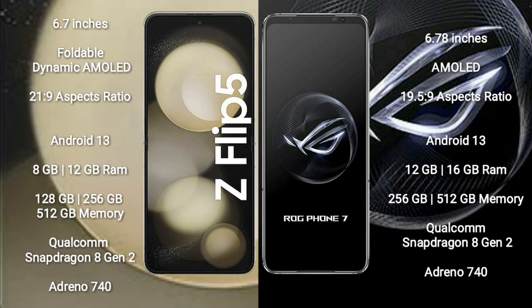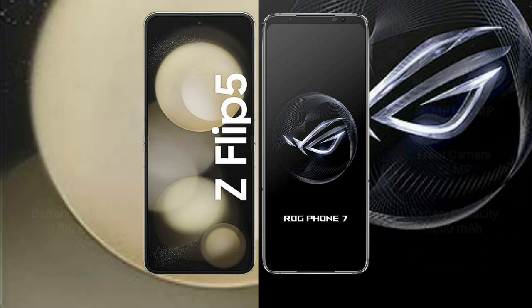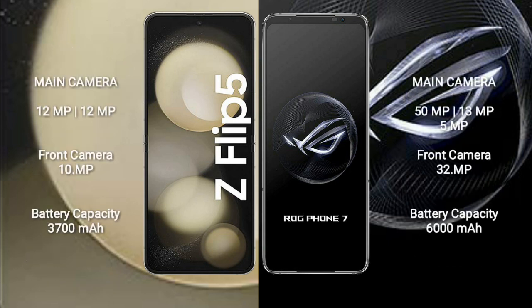The Samsung Galaxy Z Flip 5 has a rear dual camera setup of 12 megapixels plus 12 megapixels, and a front camera of 10 megapixels. The Asus ROG Phone 7 has a rear triple camera setup of 50 megapixels plus 13 megapixels and 5 megapixels, and a front camera of 32 megapixels.